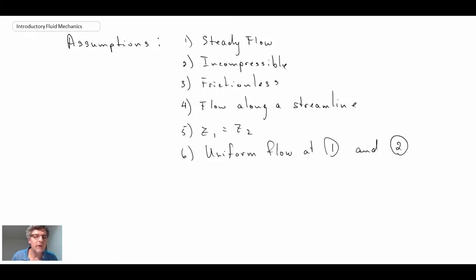So the assumptions are: steady, incompressible, density is constant, frictionless, flow along a streamline, there is no change in elevation so we're assuming a horizontally aligned nozzle, and uniform flow at one and two, so that means a top hat velocity profile into and exiting.